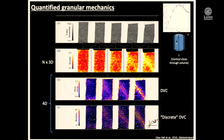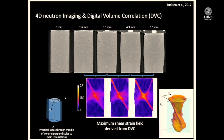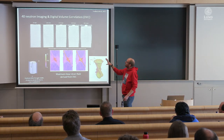This approach also works with neutrons. An artificial rock sample was deformed in situ with neutron imaging, and the same image correlation technique yielded strain fields. Whether X-ray or neutron, the image analysis pipeline is the same. This showed the sample failed by localized shear deformation with a complex 3D pattern.